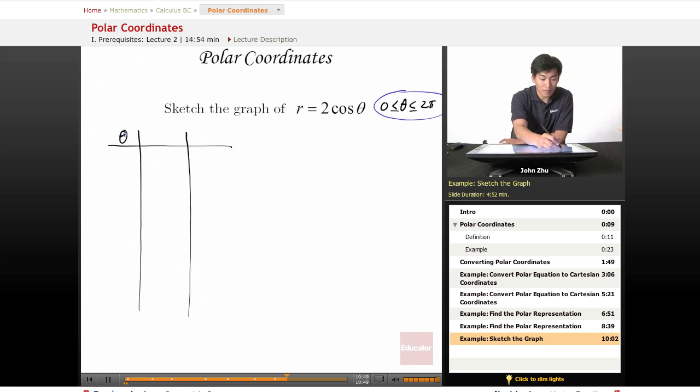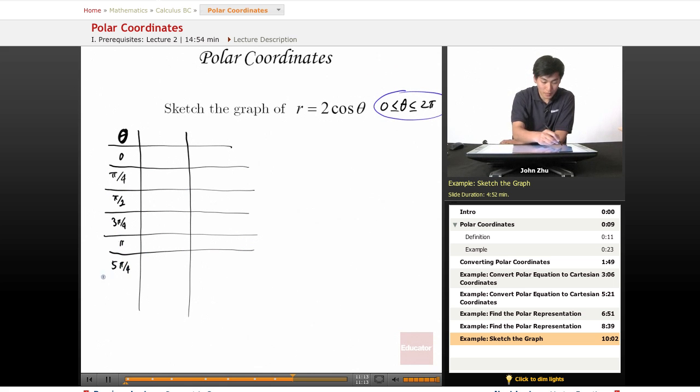For the sake of learning, we'll use steps of π/4. So 0, π/4, 2π/4 which is π/2, 3π/4, 4π/4 which is π, then 5π/4, 6π/4 or 3π/2, 7π/4, and 8π/4 which is 2π.